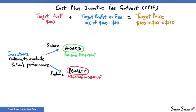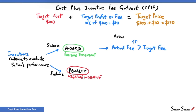An award will increase the seller's profit. The actual fee or profit will be more than the target fee. But there cannot be an indefinite increase in the actual fee. We have an upper limit called the maximum fee. Actual fee is always less than or equal to the maximum fee.